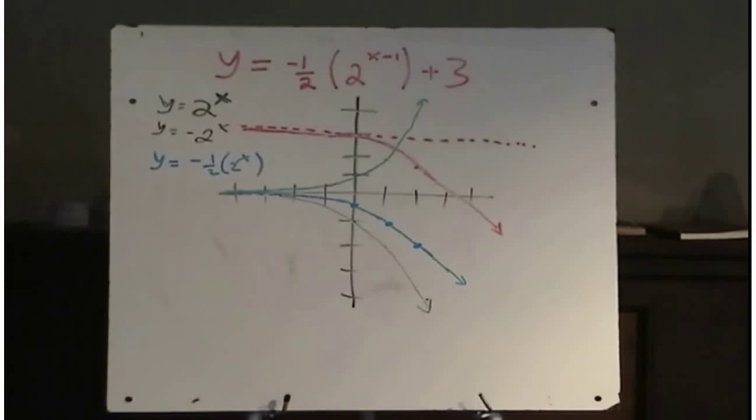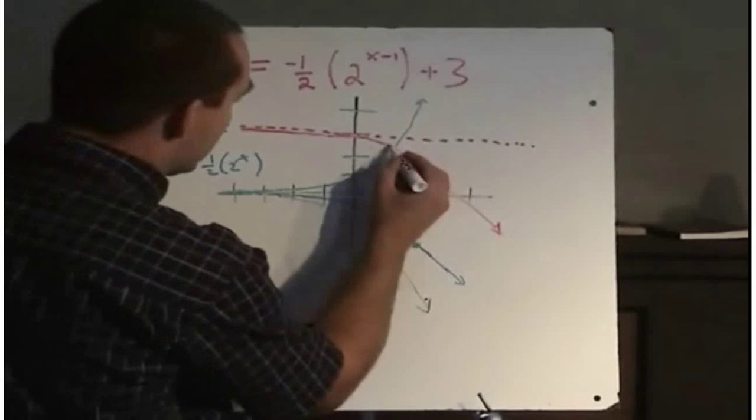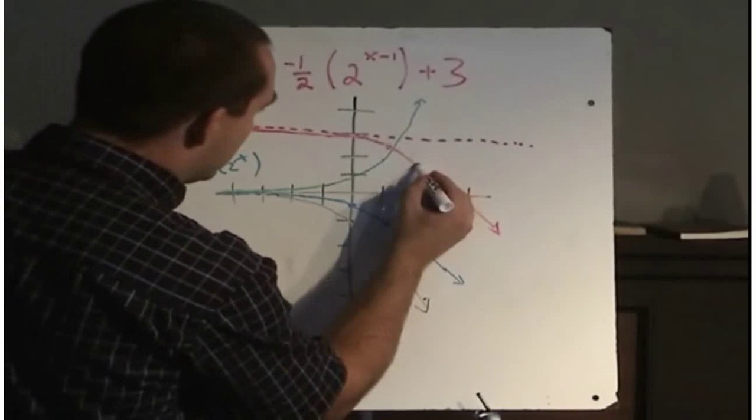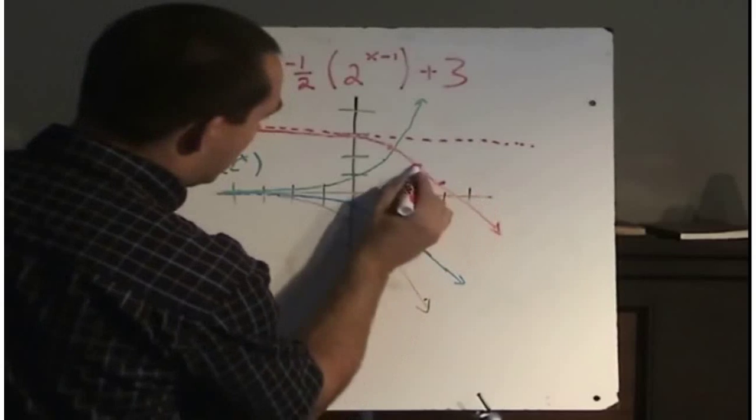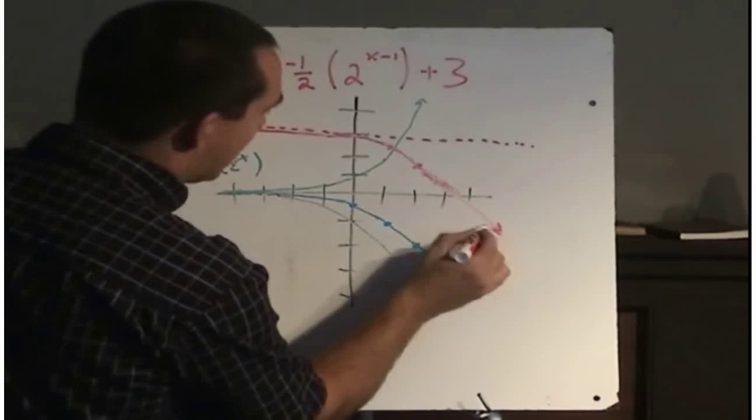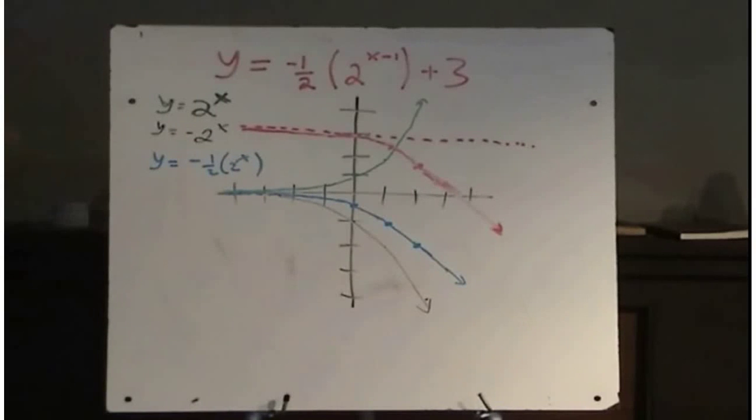Makes our graph look like this. So here's our key point. And here's my rough sketch of the graph: y equals negative one-half times 2 to the power x minus 1 plus 3.